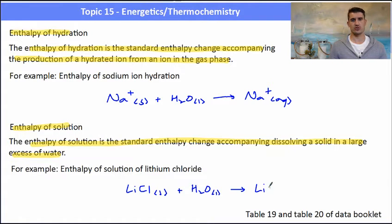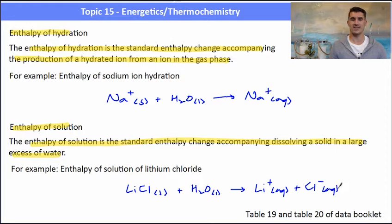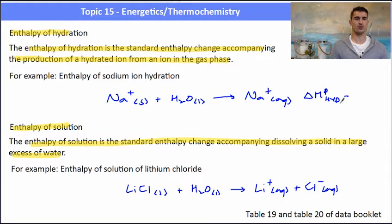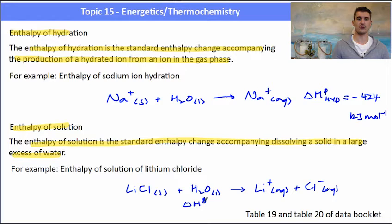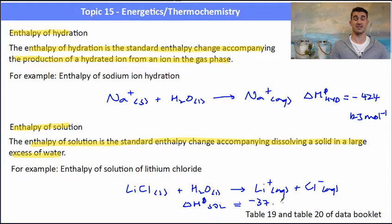When you're asked to refer to a value, you need to use the data book. Tables 19 and 20 contain the ΔH values for these particular equations. The ΔH of hydration for the sodium ion is equal to −424 kJ/mol, so it's an exothermic process. The enthalpy of solution for lithium chloride, ΔH sol, is equal to −337.03 kJ/mol. Remember to refer to the data book for those values.